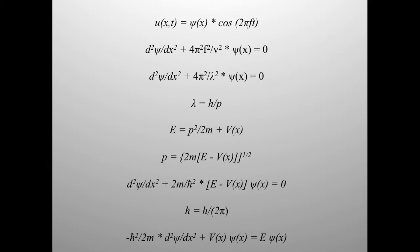We can express the total energy of a particle as: E = p²/2m + V(x), where E is total energy, m is mass, and V(x) is potential energy as a function of distance. This lets us express momentum as: p = [2m(E − V(x))]^(1/2). Substituting into the differential equation gives: d²ψ/dx² + (2m/ℏ²)(E − V(x))ψ(x) = 0, where ℏ = h/2π. This can also be written as: −(ℏ²/2m)(d²ψ/dx²) + V(x)ψ(x) = Eψ(x). This is the time-independent Schrödinger equation.